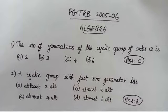The first question is the number of generators of the cyclic group of order 12. What is the formula for the number of generators of cyclic group of order n? If we calculate phi of 12, we will solve 4. So the answer is option C.